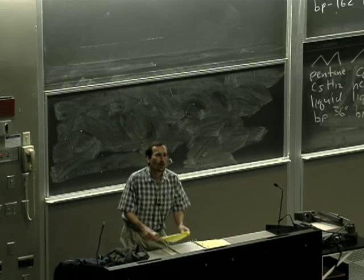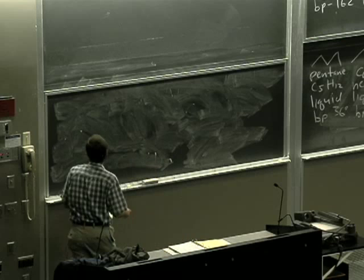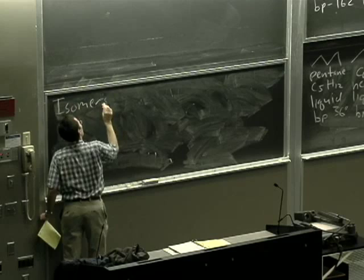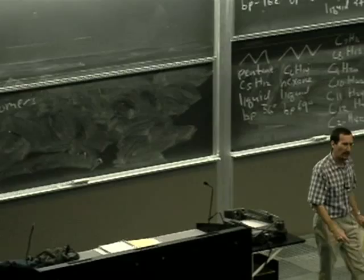All right, one of the things that alkanes give us a chance to do is to introduce ourselves to the concept of isomers. And this concept already came up when we started to look at Lewis structures of various molecules. And I remember when I asked people the structure of methyl azide, a lot of people struggled to write a structure.